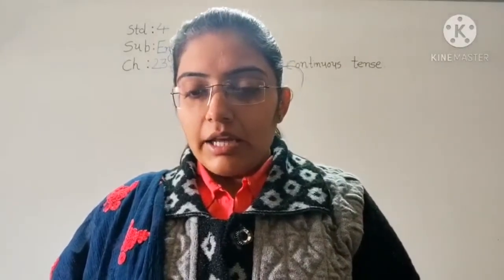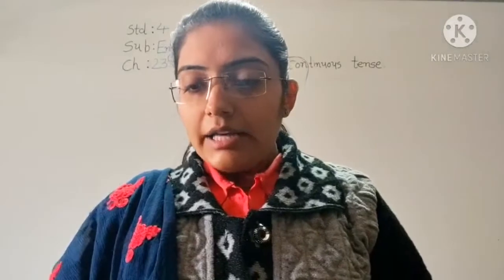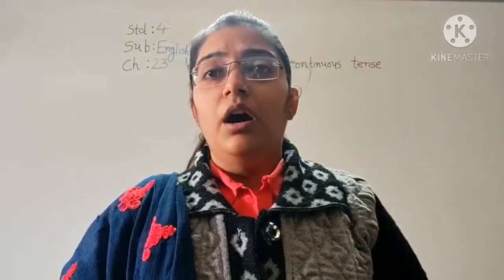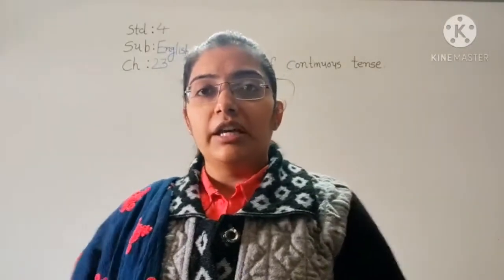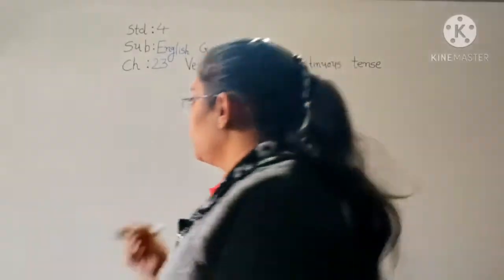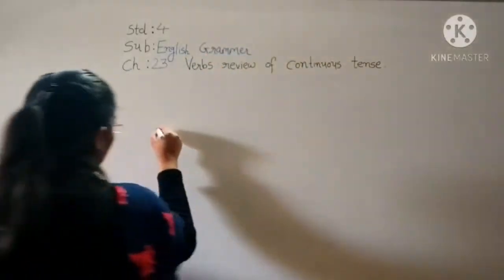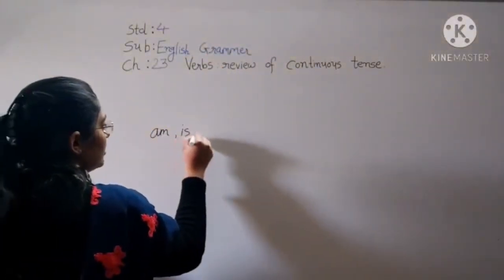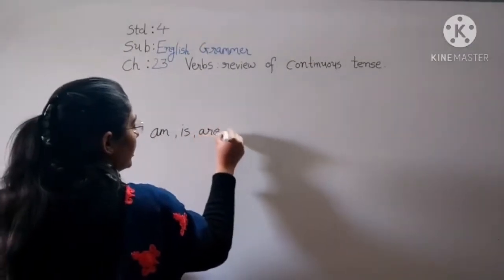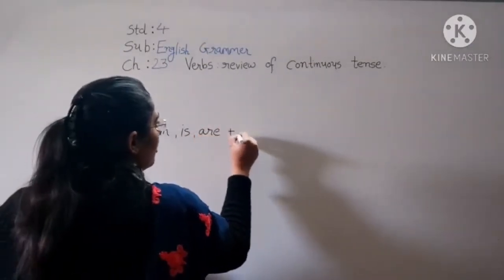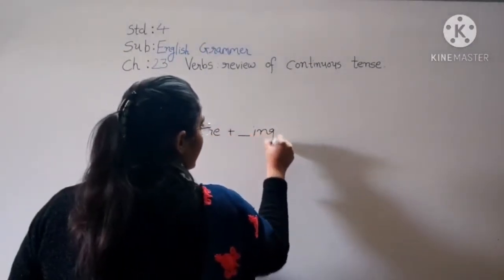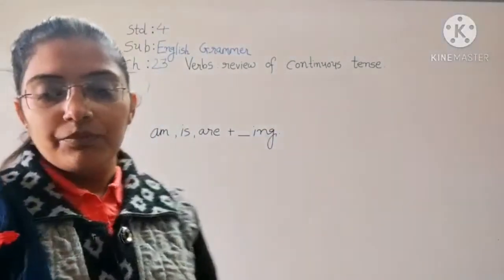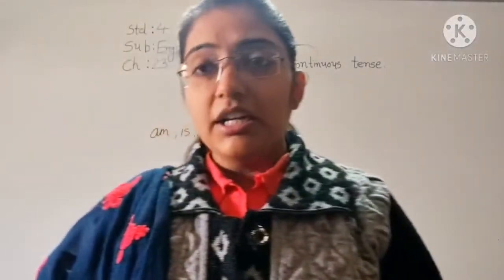We form this by using am, is, and are and adding ING to the base form of the word. So for Present Continuous, am, is, and are ka use karenge aur word ke peeche ING lagayen.